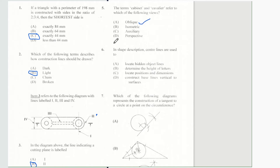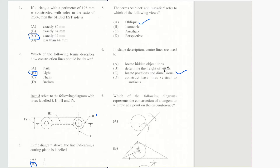Question number 6 says in shape description, center lines are used to: A locate hidden objects, B determine the height of letters, C locate positions and dimensions, or D construct baseline vertical to surfaces? And our answer for number 6 is of course C — locate positions and dimensions.